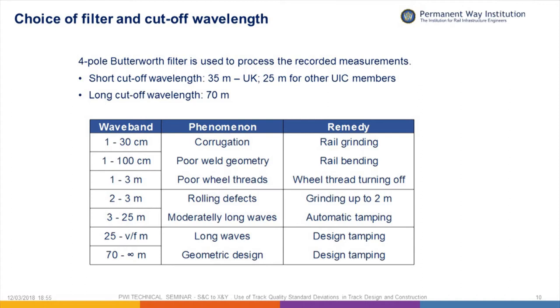The choice of filter wavelength and the choice of a four-pole Butterworth filter — which is the one used to filter that data — was decided by the UIC, but had been pioneered by British Rail Research. They traditionally used a 35-metre cutoff wavelength for the short one, while other UIC members used 25 metres, and a 70-metre wavelength for the long one. Going back into the history, it had originally been a 42-metre filter and an 84-metre filter with a 3-pole Butterworth, and this change was made to align British Rail with other UIC members.